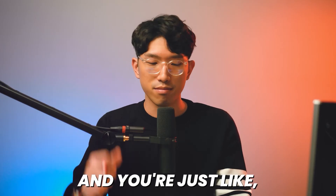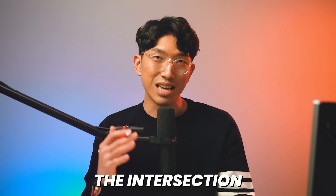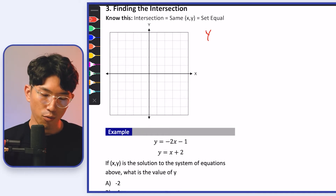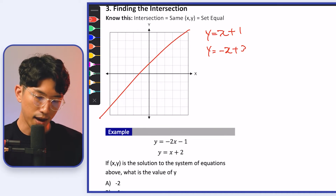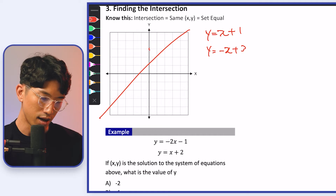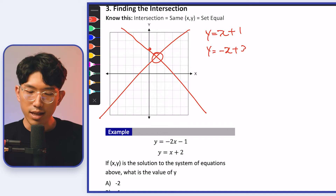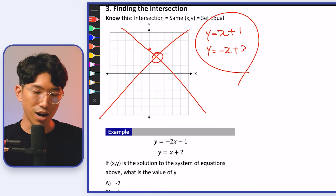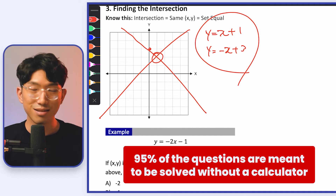If you don't know how to do this, you're leaving so many points on the table. So pay attention for the next 30 seconds. How do we find the intersection between two graphs? Let's say you have two lines: y = x + 1 and y = −x + 3. You might be working with a more complicated graph where all you're given are two equations — no graph, and don't even think about using a graphing calculator because that's a waste of time.